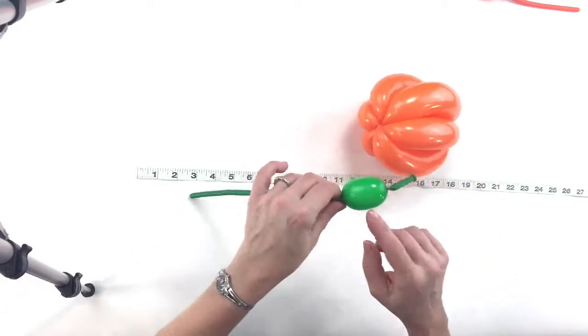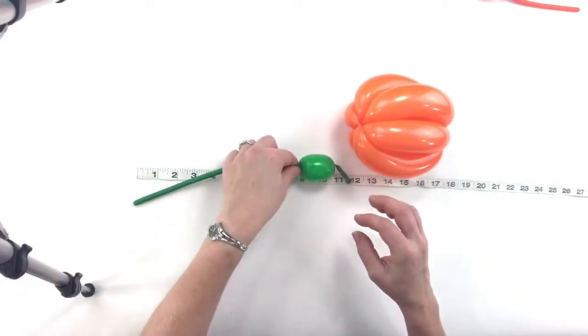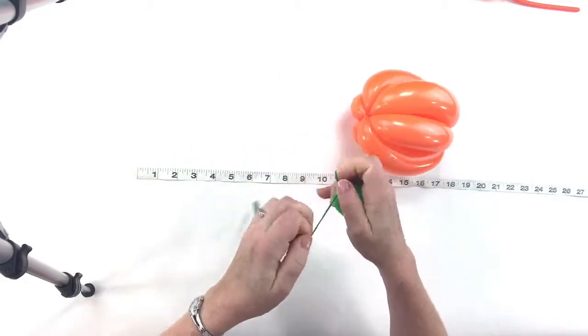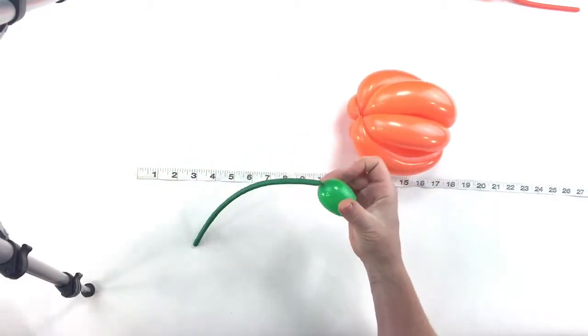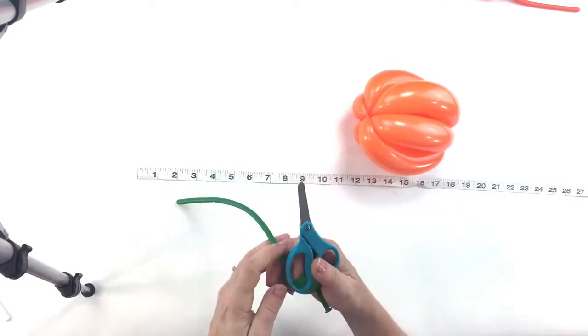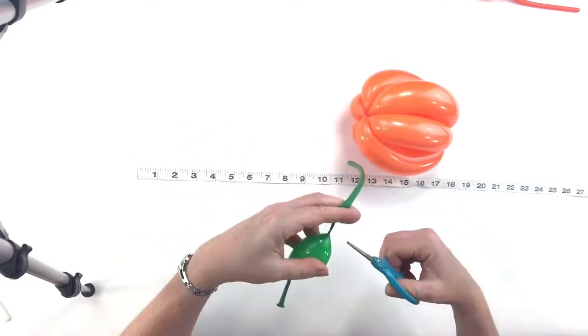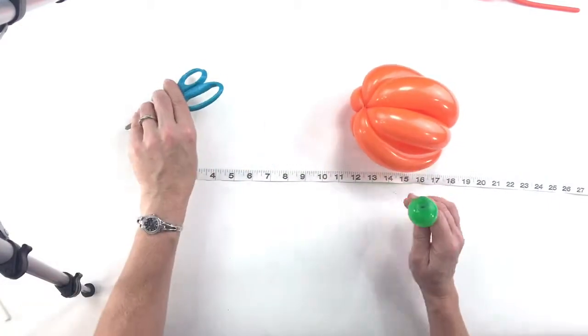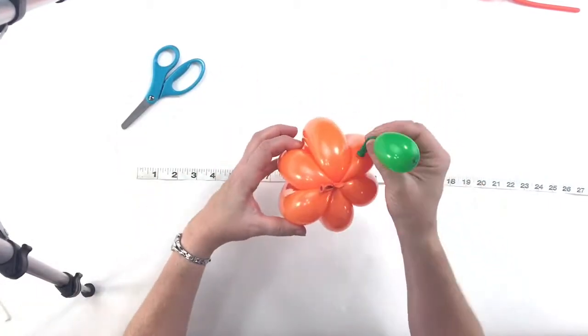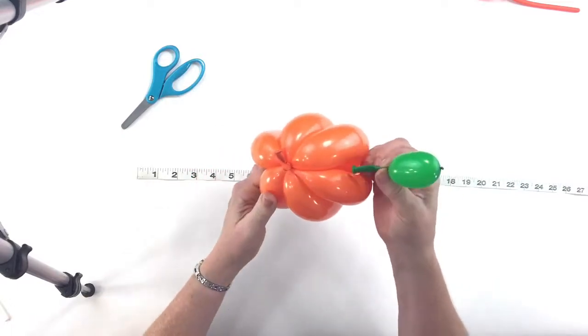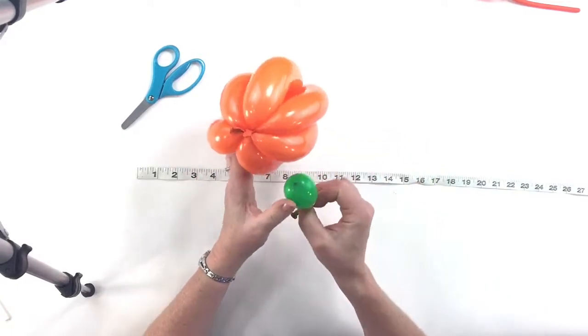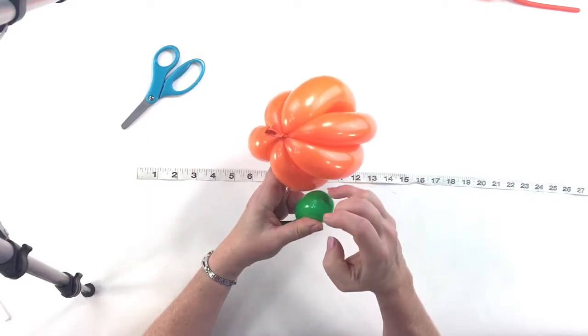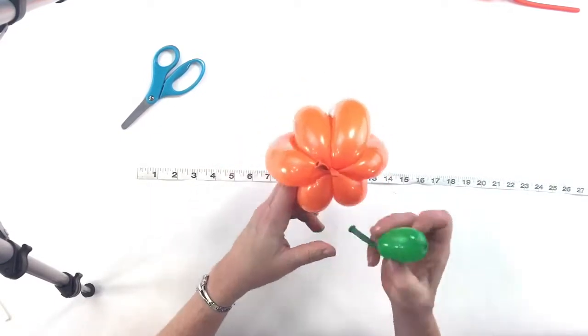And then you want to take your stem, your one and a half inch stem. You can tulip twist it, but I'm just going to tie it. If you have time to tulip twist it you can do that, but I think it looks just fine like this. So I'm going to inflate or tie it off right up above here and cut it off above the knot right there.